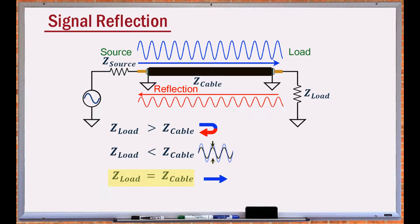An equal load impedance prevents signal reflection while delivering maximum amount of power to the load.